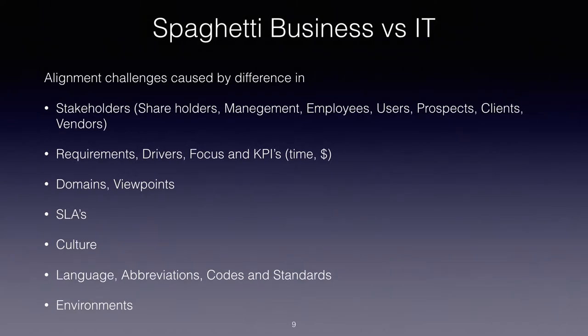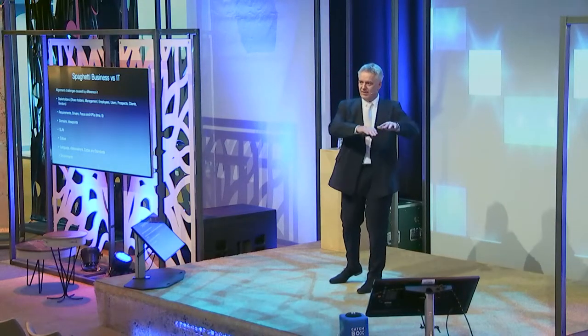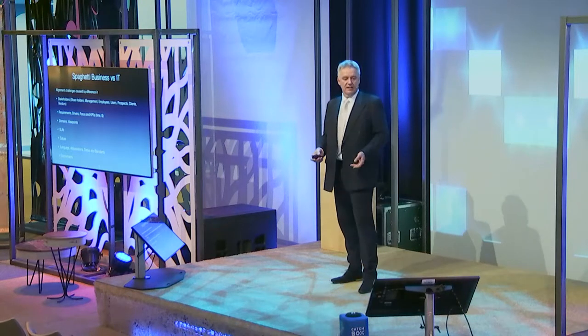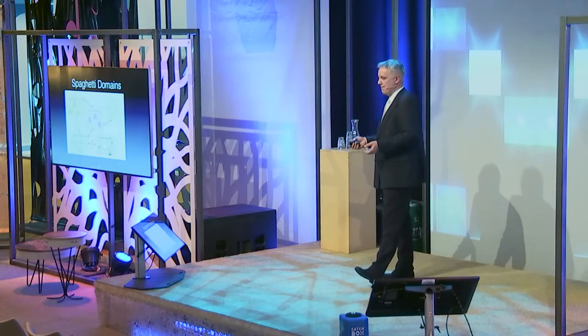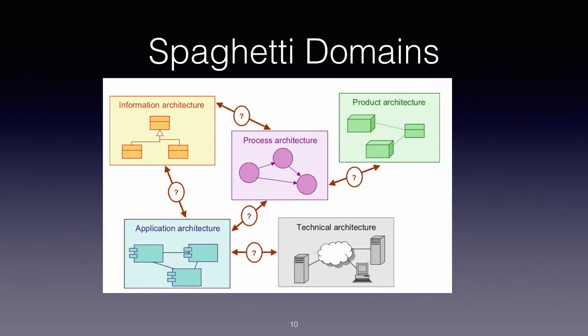If you compare spaghetti in business versus IT, you see that there are alignment challenges caused by differences in stakeholders. You have different requirements, drivers, focus, and KPIs based on business versus IT. You have different domains and viewpoints, service level agreements, different cultures between business and IT, different language, abbreviations, codes, and standards, and a different environment. Those are examples of IT and business fragmentation.